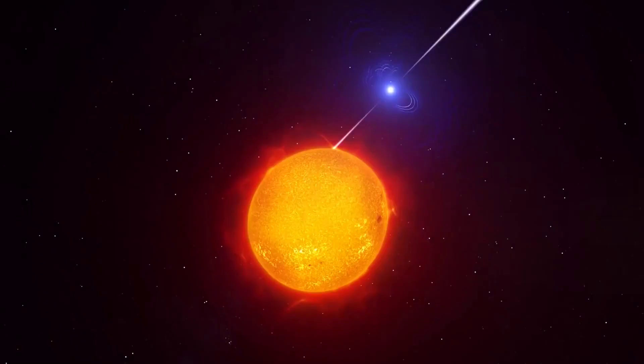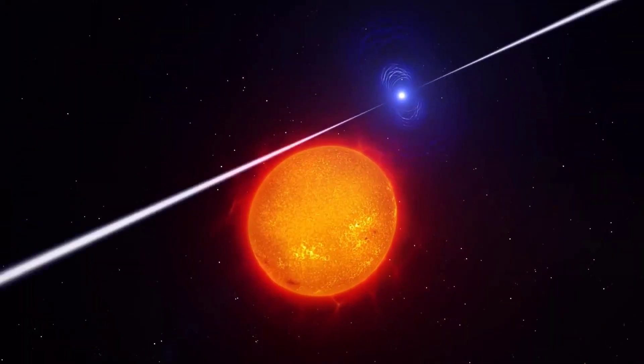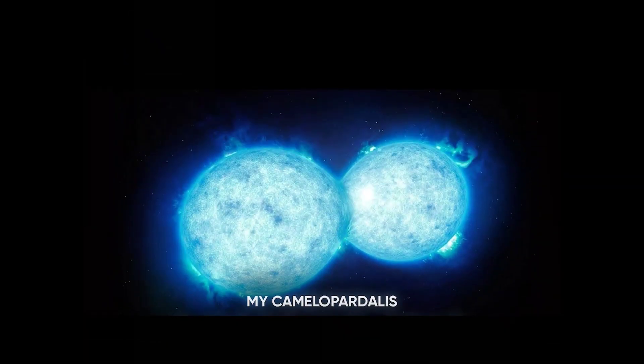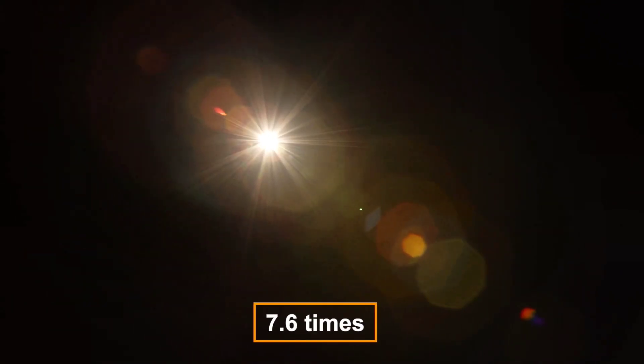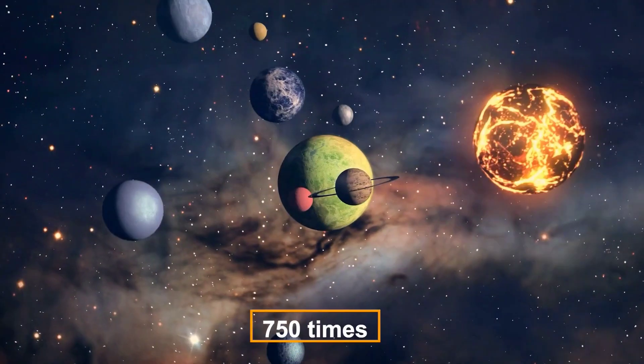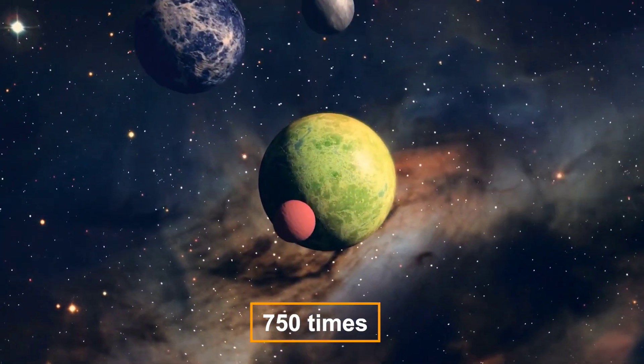My Camelopardalis is a binary star system in which two hot blue O-type stars orbit each other. One of the stars, A, has 37.7 sun masses, while its companion, B, has 31.6 sun masses. Each star has a radius of 7.6 times that of the sun, and about 750 times that of our planet.